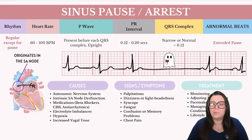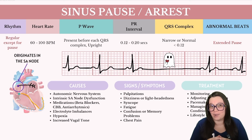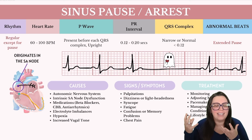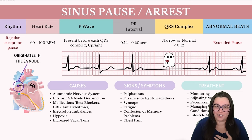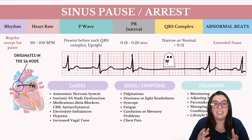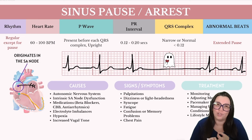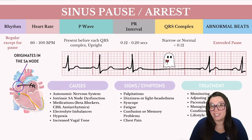Despite these abnormalities, the PR interval is going to remain within normal limits and the QRS complex width is going to be narrow and normal. This rhythm can be caused by a number of reasons. The autonomic nervous system can cause excessive stimulation of the vagus nerve, leading to a decrease in SA node impulse generation. This is often seen in response to physiological stimuli such as gagging, vomiting, or intense emotional stress. If you've ever taken care of a patient who was straining on the toilet and suddenly passed out, you may see a sinus pause or sinus arrest on the monitor.